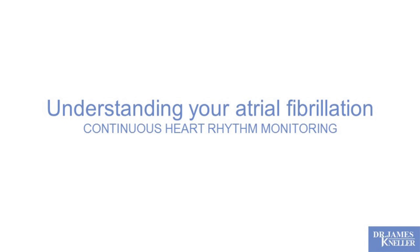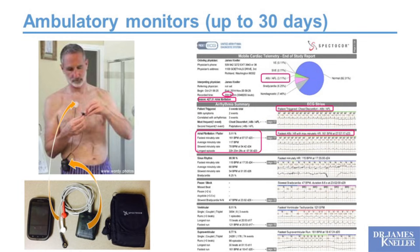Understanding your atrial fibrillation brings us to continuous heart rhythm monitoring. In our clinic, we typically start with an ambulatory monitor worn up to 30 days — three stickers on the chest with electrodes attached to a hip pack. After that period, we receive a report. In one example, atrial fibrillation was found 3.1% of the time over 30 days, with symptoms correlating to rapidly conducting atrial fibrillation. The tracings are visually confirmable and exceedingly accurate.